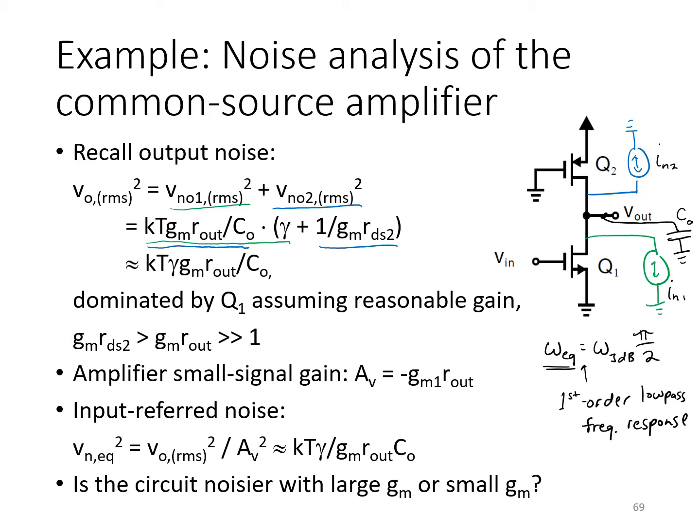We can find the total spectral density of the output by this noise equivalent bandwidth. In this case, the 3 dB bandwidth here is simply dominated by the output time constant Rout times CO, CO including all parasitic capacitances at the output. So that's how we arrive at these two terms shown here on the left.